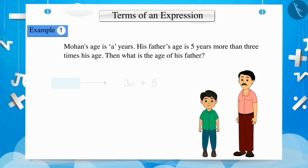If you look at this expression carefully, you will notice that it has two terms. The first term is formed by the product of 3 and A and the second term is 5. Thus, 3 and A are the factors of the first term.